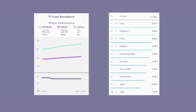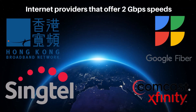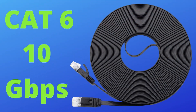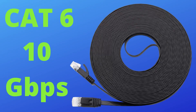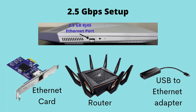Average internet speeds still hover around the 66 megabits per second mark, and there are only a few providers offering speeds up to 2 gigabits per second, so Cat 6 will still be more than capable of handling these higher speeds. For such speeds, however, the routers and network card should also be upgraded to take advantage of fast downloads. A few recommended routers and network cards are linked below.